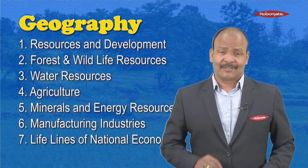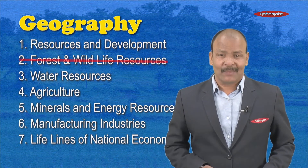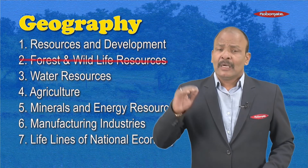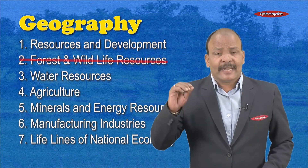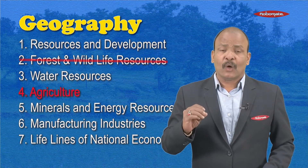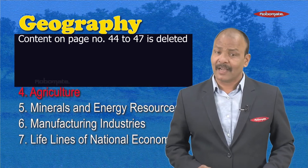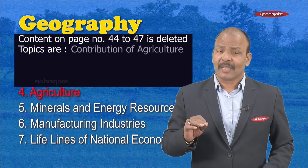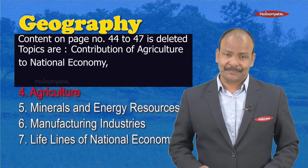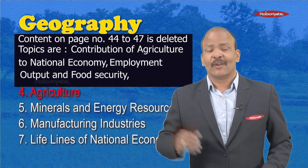Coming to Geography - in Geography, in the textbook you again have seven chapters and out of that the second chapter is omitted. The name of the chapter is Forest and Wildlife Resources. Talking about the fourth chapter, that is Agriculture - in Agriculture, the content on page number 44 to 47 is again deleted.